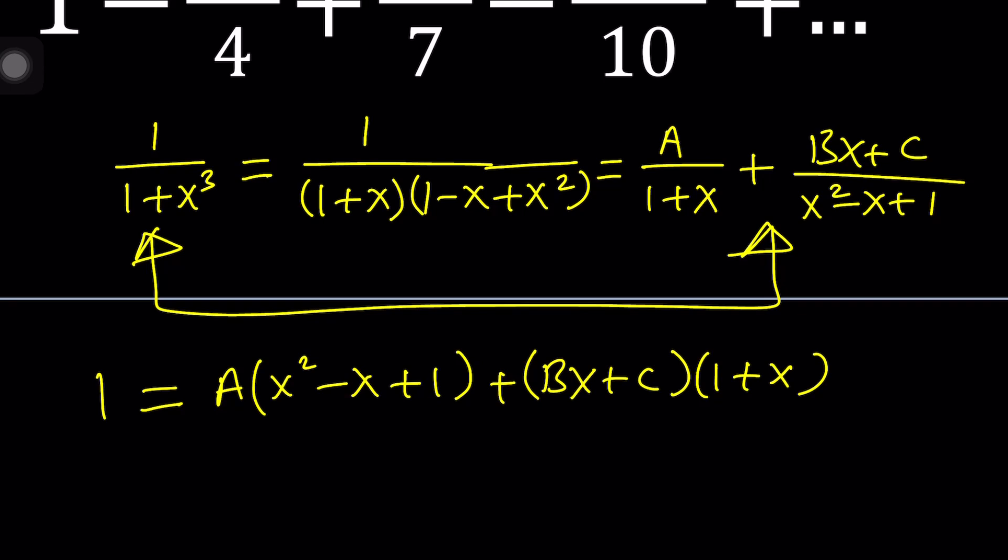Now, there's a couple different ways to go about it. You can go ahead and replace x with certain values such as 0, 1, and negative 1. Or an alternative method would be distribute everything, get a polynomial, and then compare the two polynomials. The coefficient of x squared must be 0, the coefficient of x must be 0, and the constant term must be 1. The first method is usually easier.